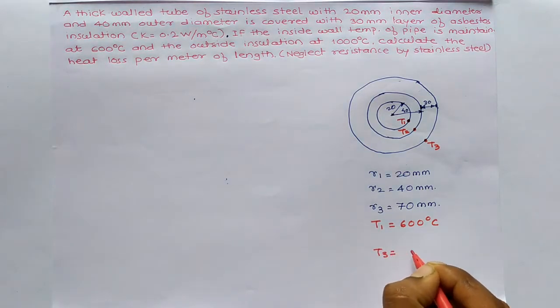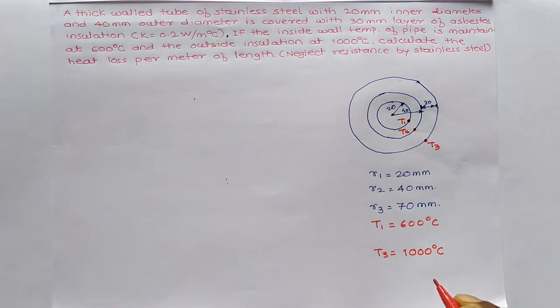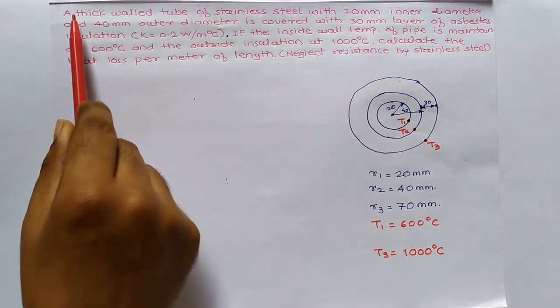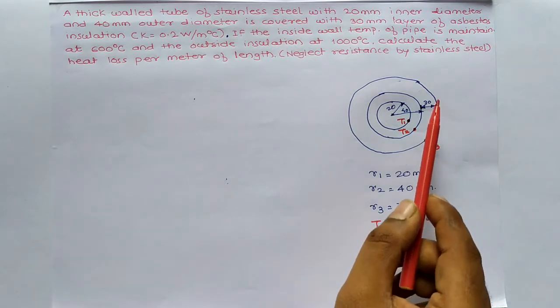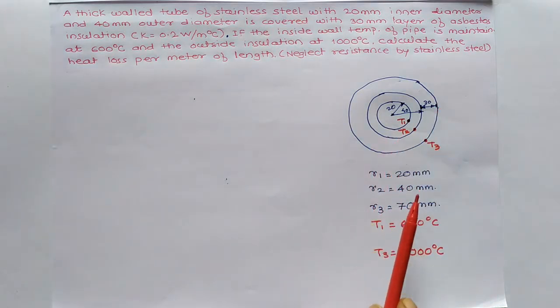So I will keep some distance over here. Outside temperature is 1000 degrees Celsius. Gradually, when you read the example, try to plot the diagram so that it will be easy to interpret the data.